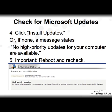If you have no high priority updates for your computer, then you're basically done with this step. So just reboot and recheck. Many of the Microsoft updates and patches are sequential, so once they install you have to go back and run the URL again to check. You keep running that until you've rebooted, checked again, and there are no more high priority updates to install, and you're good to go.